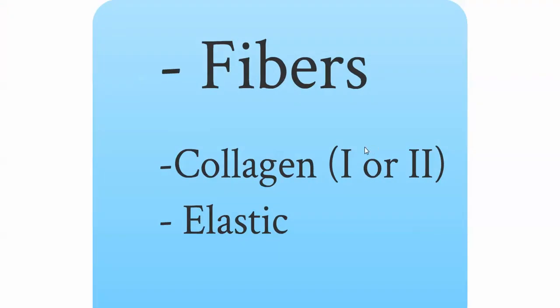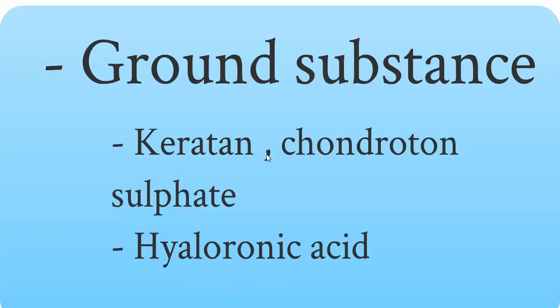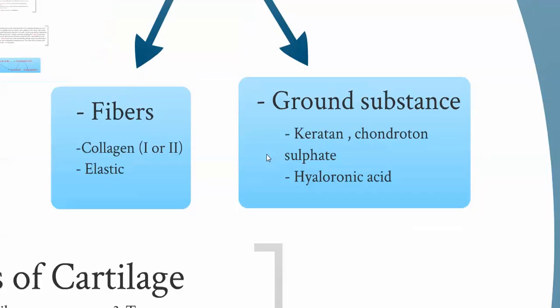Now let's talk about the matrix. It consists of fibers and ground substance. The fibers include collagen type 1 or type 2, and elastic fibers. The difference in fiber composition between cartilage types gives us the different types of cartilage. The ground substance contains keratin, chondroitin sulfate, or hyaluronic acid.